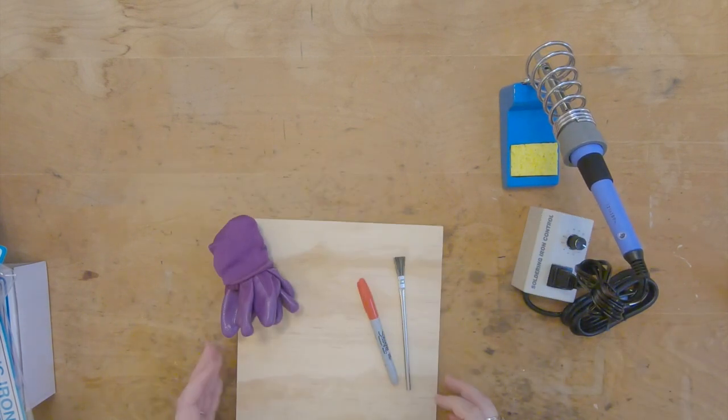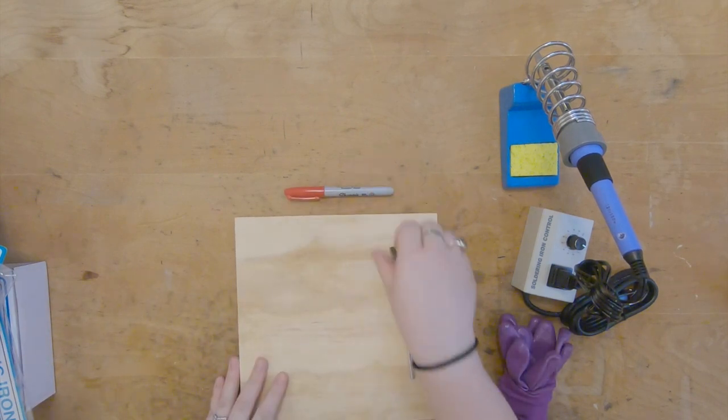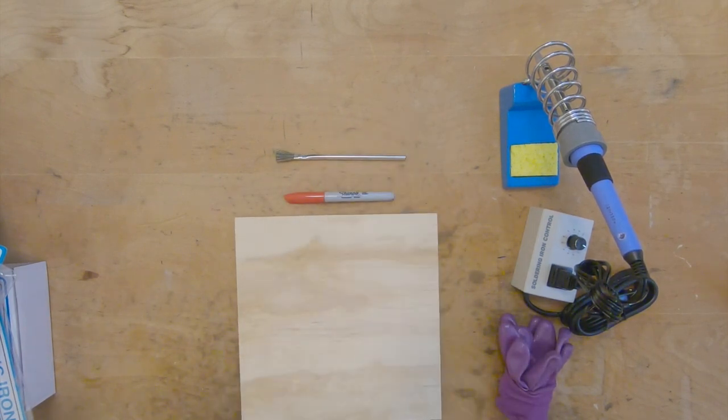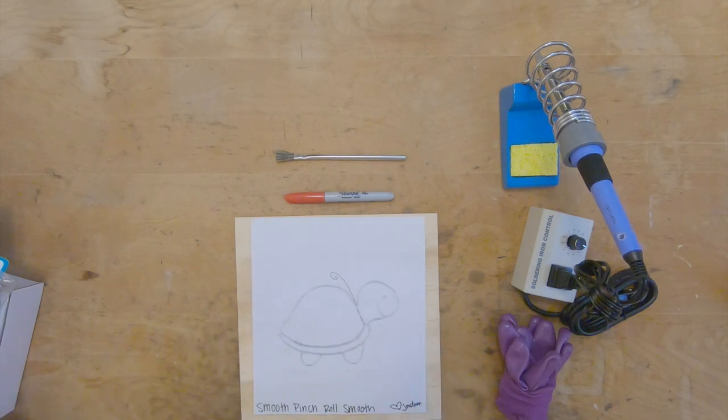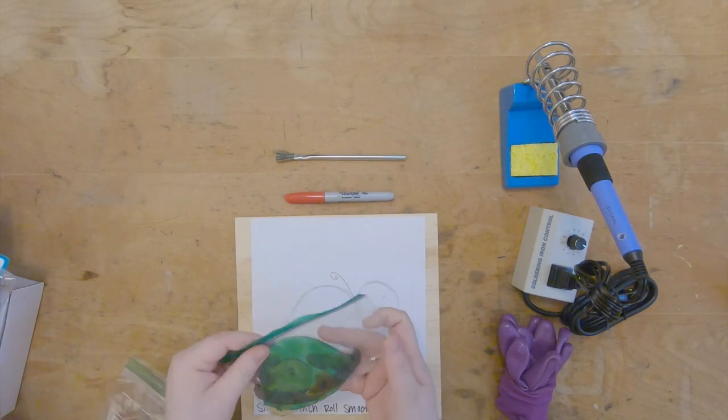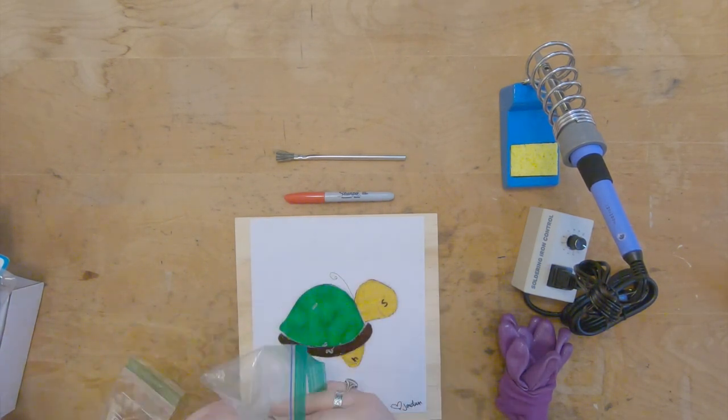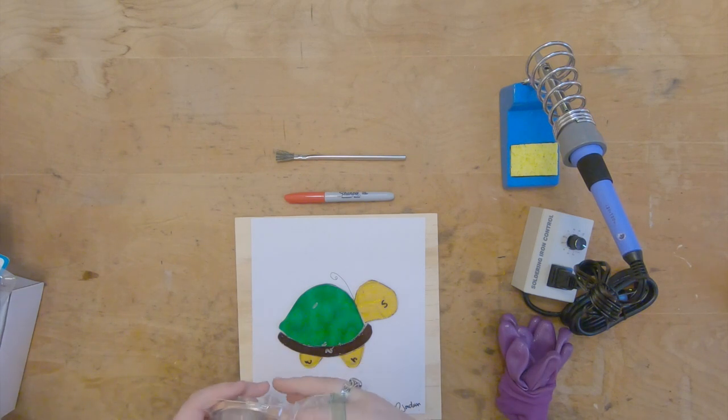We have our work board, gloves, sharpie, and flux brush. Next we have everything in our design kit. We have our pattern, our glass pieces, and then in here we have our consumables.